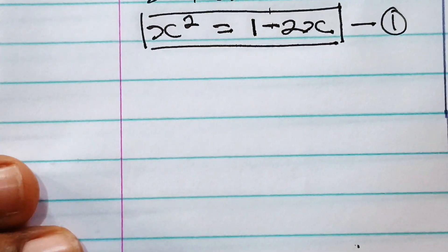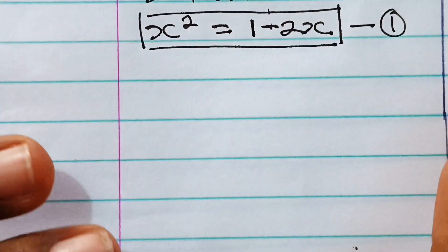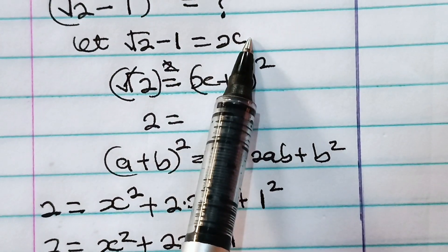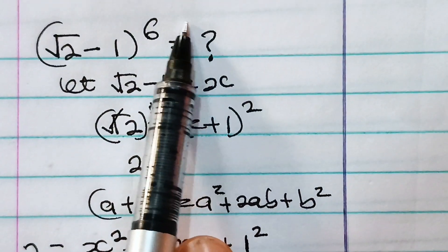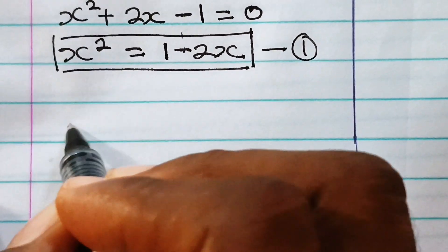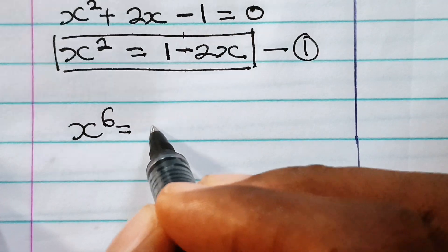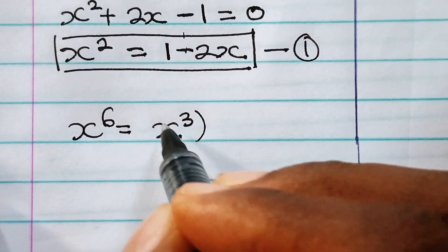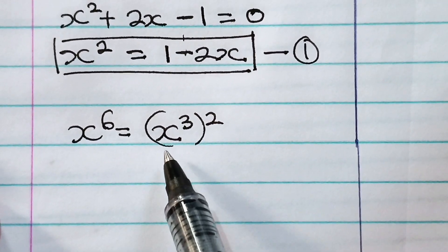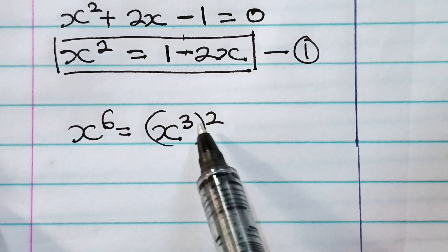Let me explain why I had to find the value of x squared. Recall that we said let square root of 2 minus 1 be equal to x. That means we are looking for the value of x to the power of 6. Now I want us to analyze x to the power of 6. x to the power of 6 is the same thing as x to the power of 3 raised to the power of 2. So if we are able to get the value of x to the power of 3, we just square it to get x to the power of 6.